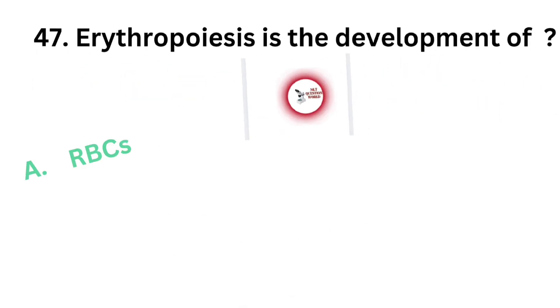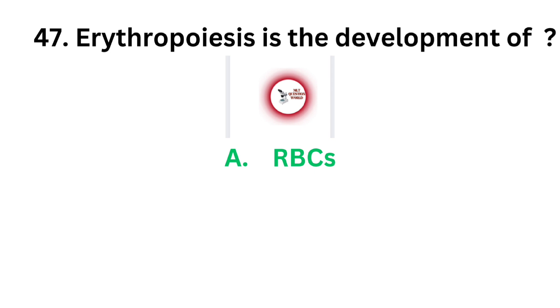The correct answer is option A, red blood cells. Erythropoiesis is the development of red blood cells, or RBCs.